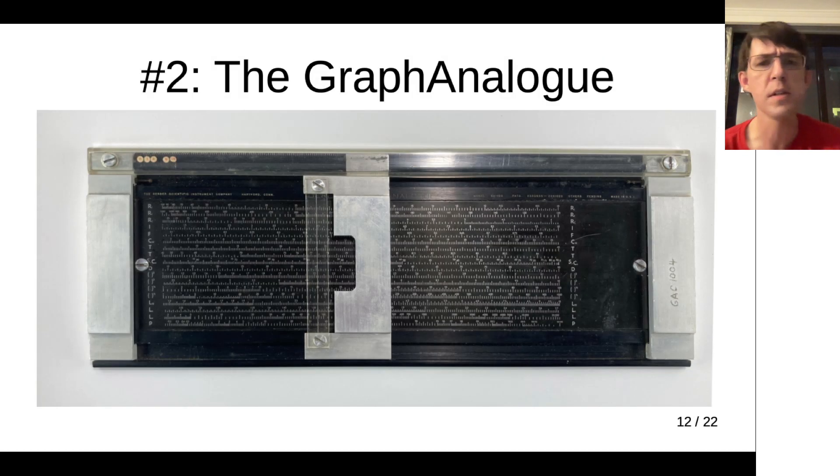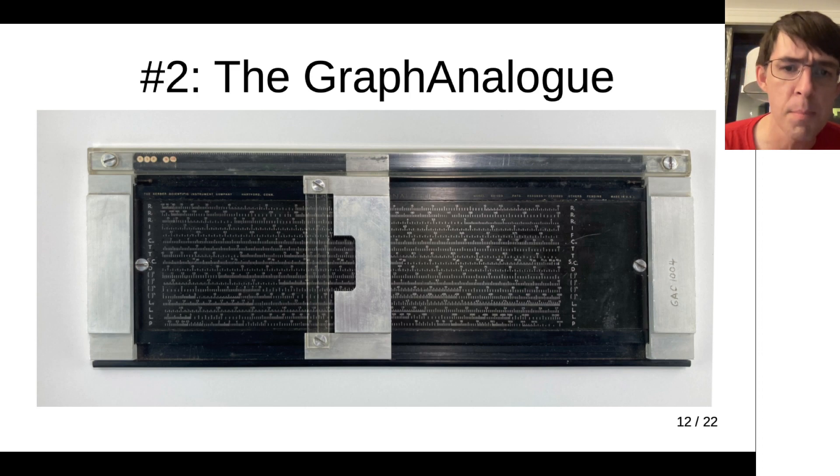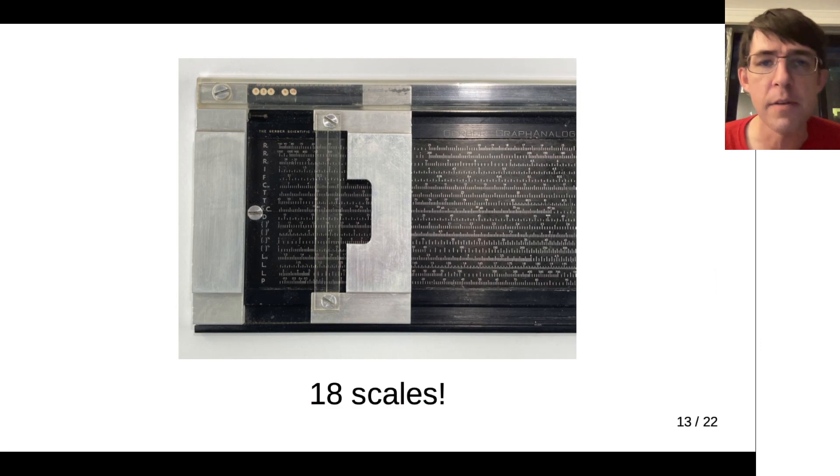Here's the second one. This is sort of a deluxe and, in my opinion, somewhat ridiculous version of the variable scale called the graph analog. It has a variable scale on the top, but otherwise it has 18 individual scales that let you do all kinds of obscure and strange other graphical tricks.